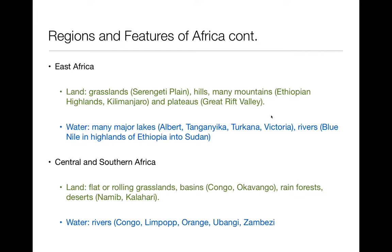There are also some lakes and rivers in East Africa — Lake Victoria, kind of in the northeast. The rivers include the Blue Nile, a source of the Nile, and the Albert River as well. Lastly, in Central and South Africa, there are a lot of flat grasslands, some basins, rainforest, and also desert, along with more rivers.